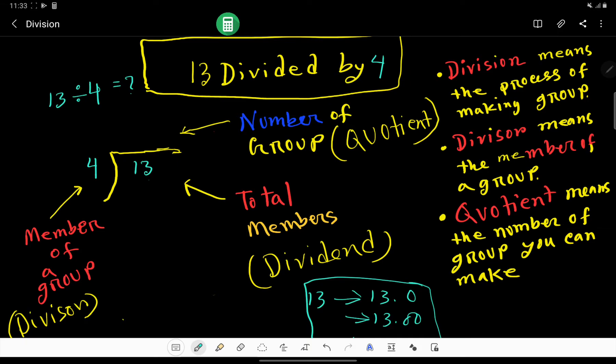13 divided by 4, what will be the result? If I translate this expression, then I get 13 divided by 4 equal to what. If I present this division in the long form, I have to write 13 as the dividend here and 4 as the divisor here.